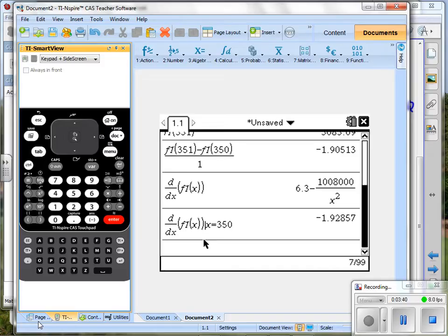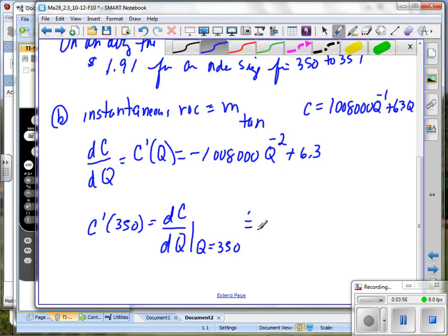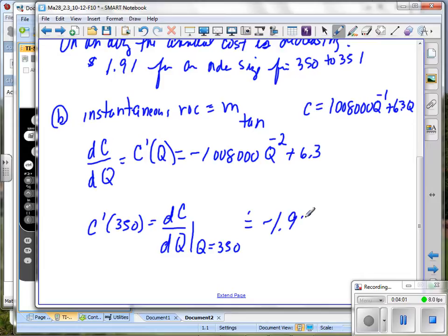So this is the same thing as putting 350 into the derivative up here. And I see negative, it's approximately, I'll take that away for now, approximately negative one point, what was that, Ryan? Nine two something. Eight. Eight. So we could round it to approximately $1.93 on here, negative on there.